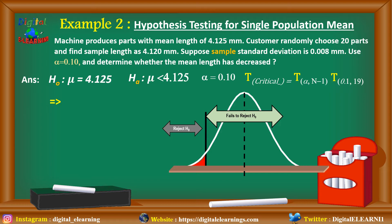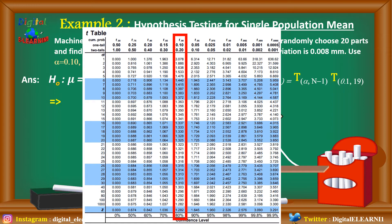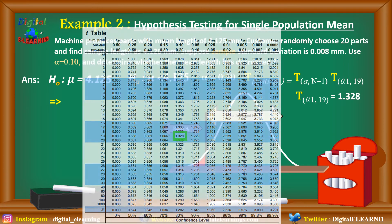The t critical value is t 0.1 with n minus 1 equals 19 degrees of freedom. Looking at the t table under the one-tailed column at t 0.1, and finding degree of freedom 19, at the common intersection we get 1.328 as the t critical value. Since it is a left-tailed test, it will be negative, so the critical value is minus 1.328.